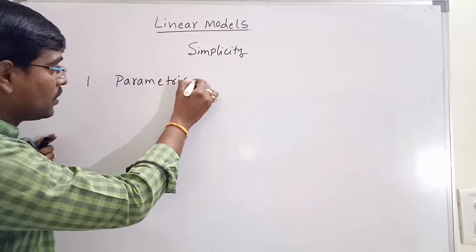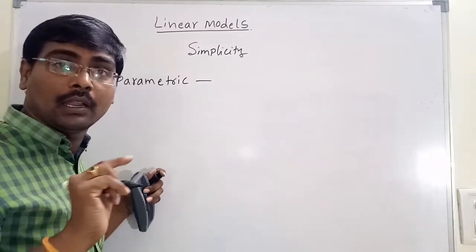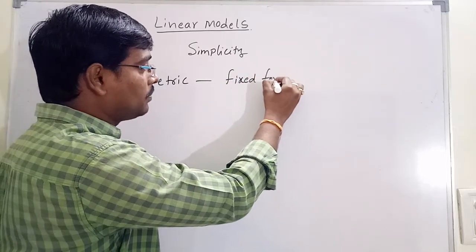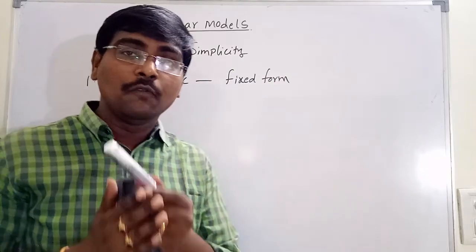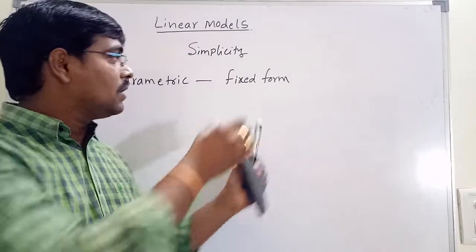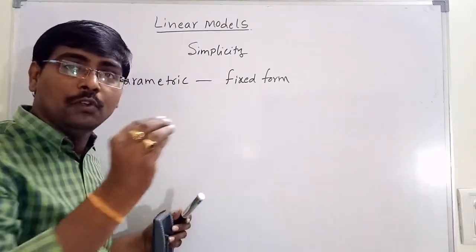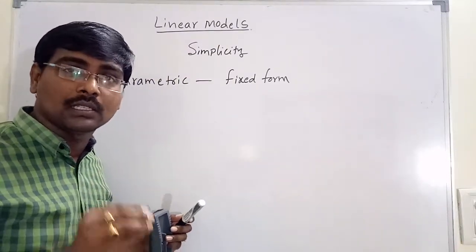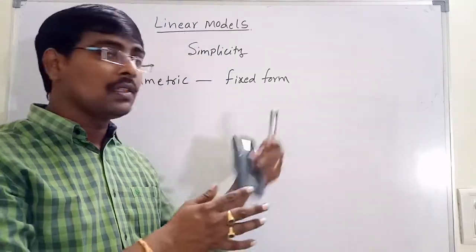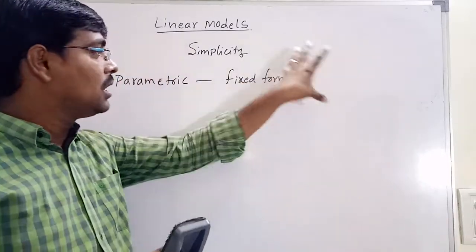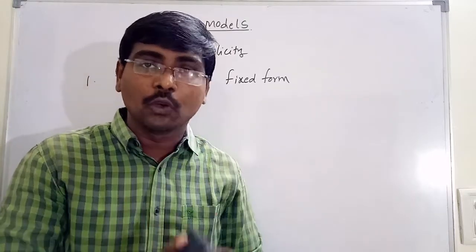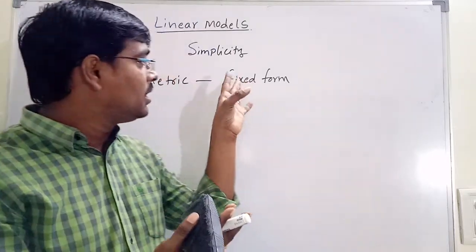Linear models are parametric. Parametric means the linear models have a fixed form — a fixed structure with a smaller number of numeric parameters, only a minimum number of numeric parameters that are to be learned from the data. From the given data, we are learning only a small number of numeric parameters and it is a fixed structure.